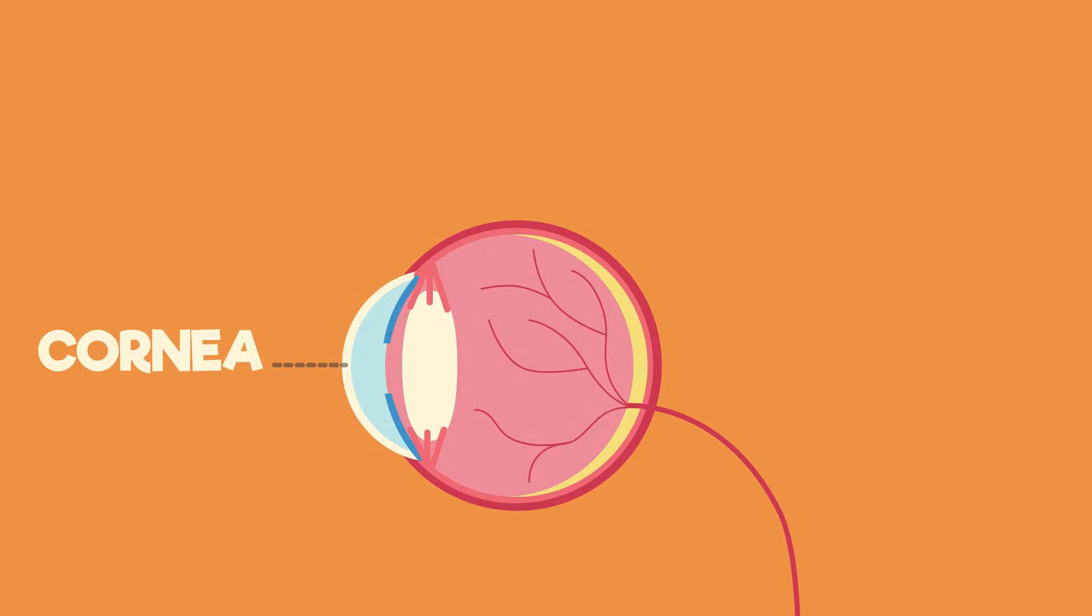The cornea covers the entire front part of the eye. It is convex shaped and so it bends or refracts incoming light into the lens.